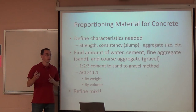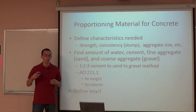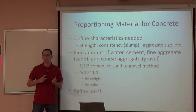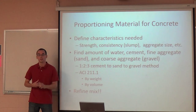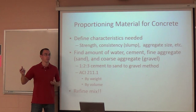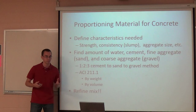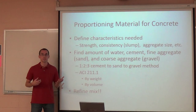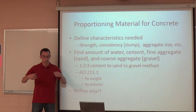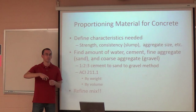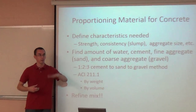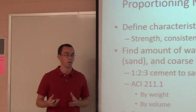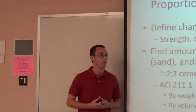Before you start to prepare your mix of concrete, you want to know what characteristics you want. You want to know the strength — do you want 4,000 PSI, 6,000 PSI? They can get to roughly 20,000 PSI compressive strength. You also want to know the consistency, which is measured by the slump test. You have a cone, you fill it up with the concrete, lift the cone up, and the instantaneous drop in height of the concrete is your slump, which gives you a good idea of how workable it will be when you pour it.